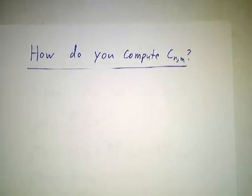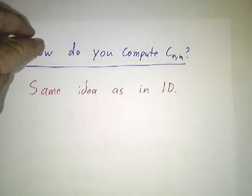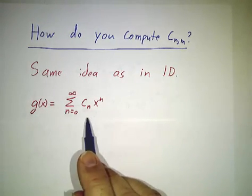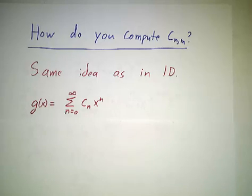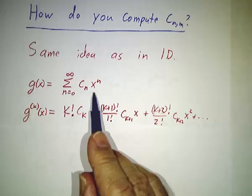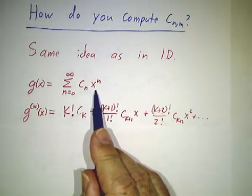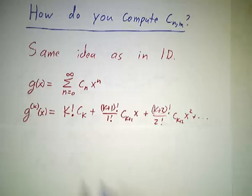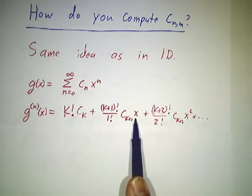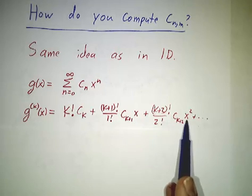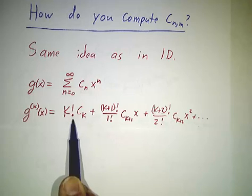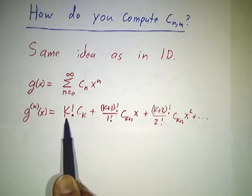We're going to use the same strategy that we used for functions of one variable. Recall that if you had a function of one variable that you wrote as an infinite power series, then if you took its kth derivative, all the terms with fewer than k powers of x died when you take a derivative k times. All the terms that have more than k powers of x wind up with some leftover powers of x.